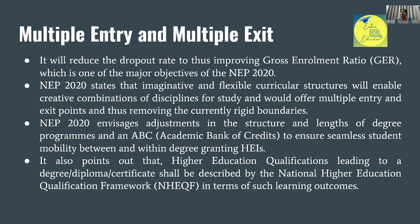NEP 2020 adjustments in the structure and lens of degree program की बात करता है। जैसे अभी 3 साल का degree program है — आपको तीनों साल पढ़ने हैं, पास करने हैं। अगर आप दो साल भी पढ़ते हैं तो भी हाथ में कुछ नहीं रहता यदि तीन साल का examination pass नहीं किया। और ABC — academic bank of credits — सबसे खूबसूरत topic। यह concept किसी भी पहले की राष्ट्रीय शिक्षा नीति, committee, या commission में नहीं था। To ensure seamless student mobility between and within degree granting HEIs — student mobile हो सके, उसके पास ABC होगा।